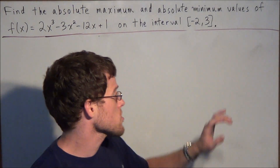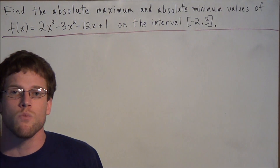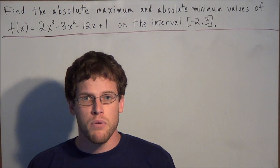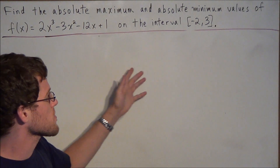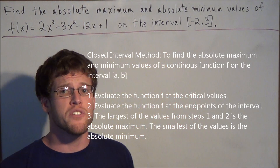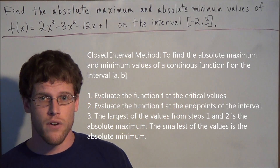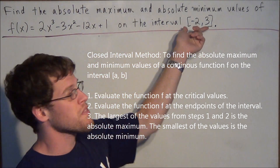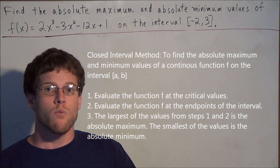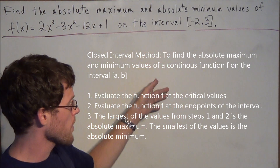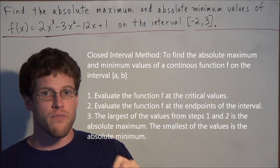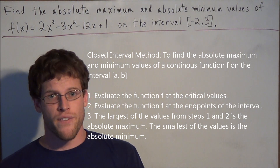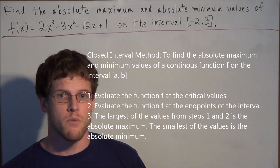Keep in mind that we're doing this on a closed interval. The method we're going to use is called the closed interval method. We use this on a continuous function. The first thing we do is find the critical values of the function, then plug those back into the function along with the endpoints of our interval. We look for the greatest value — that's our absolute maximum — and the smallest value — that's our absolute minimum.